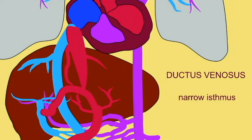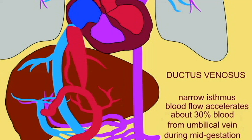This narrowness increases the speed of blood traveling through the duct reaching the heart, and the speed of blood flow can more than quadruple as blood goes from the umbilical vein through the ductus venosus. The amount of blood passing through the ductus venosus varies from perhaps 30% of the blood in the umbilical vein midway through gestation to perhaps 20% later, although there are variations.